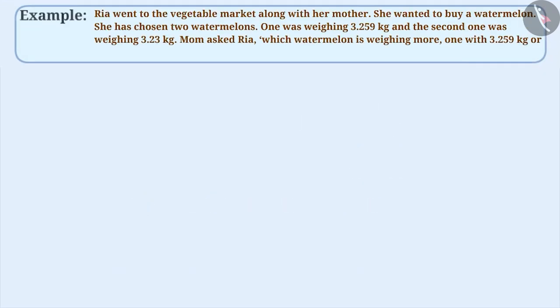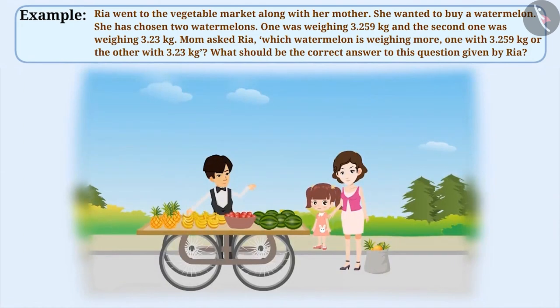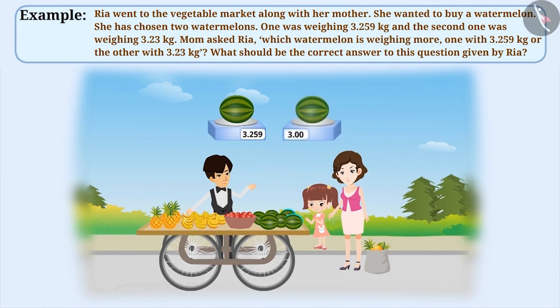Next example. Ria went to the vegetable market along with her mother. She wanted to buy a watermelon. She has chosen two watermelons, one weighing 3.259 kg and the second one weighing 3.23 kg.